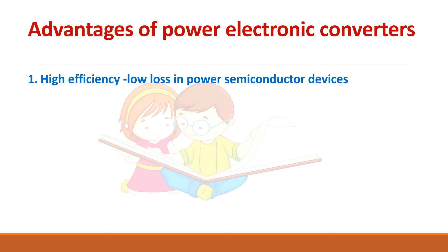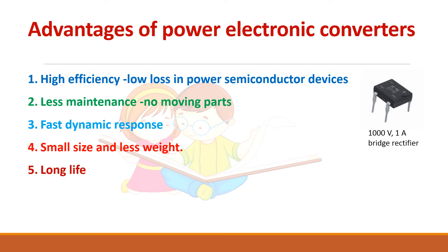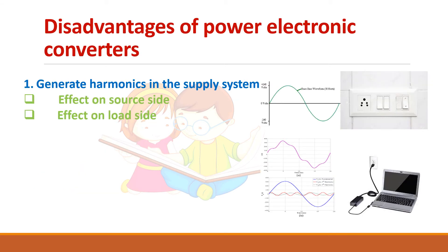The advantages of power electronic converters: first, they have higher efficiency and low losses in power semiconductor devices. This is a bridge rectifier of 1000V and 1A specification — you can see the size is very small. They are also static and have a fast dynamic response, meaning if you give the input you get the output quickly. They also have a longer life and are highly reliable.